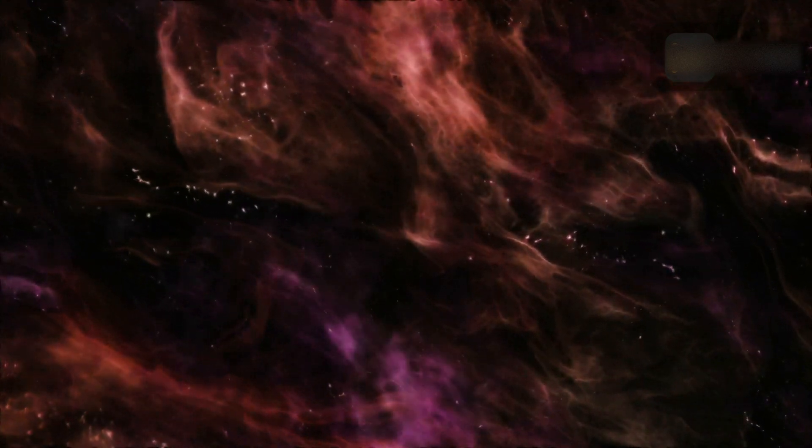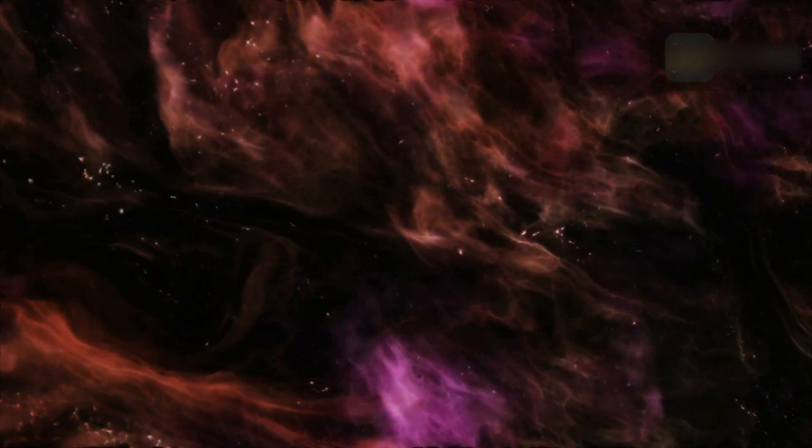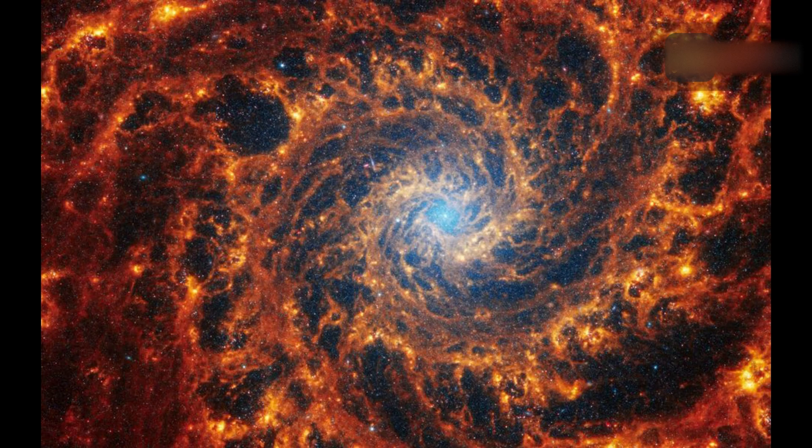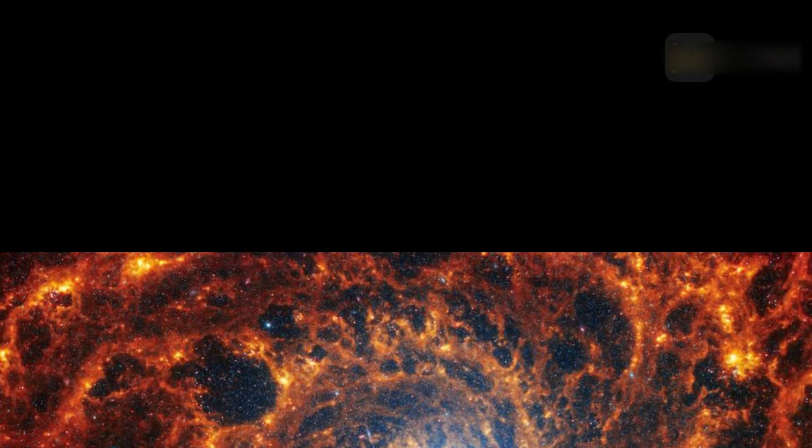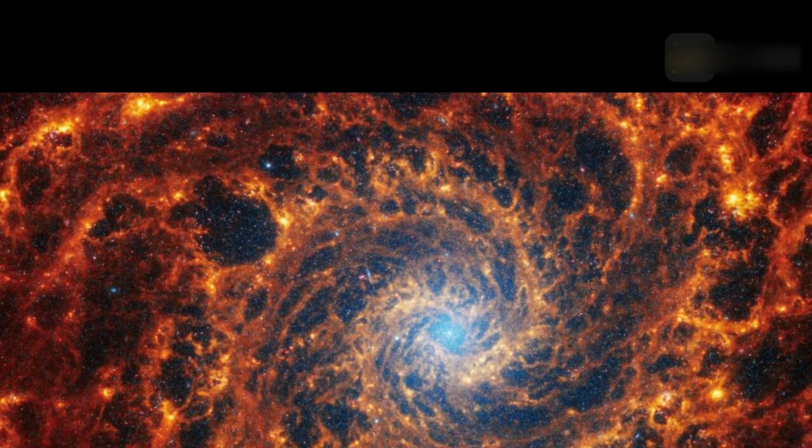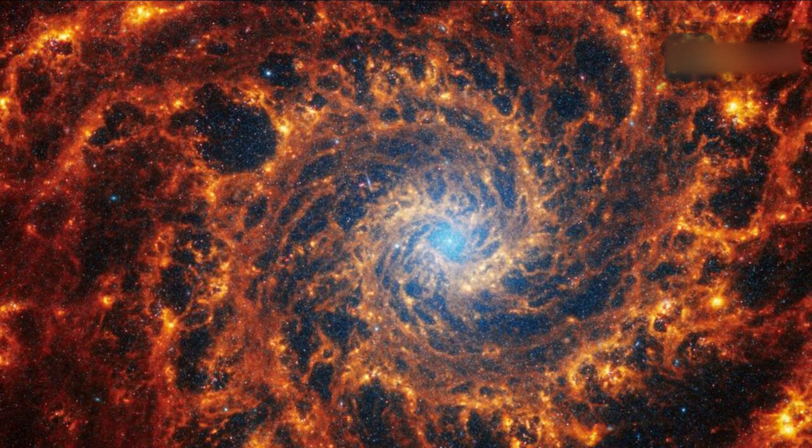These spiral arms have arguably never appeared more dynamic and vibrant than they do in the new JWST image of NGC 628, a spiral galaxy located 32 million light-years away in the constellation Pisces. In the image, the galaxy's arms appear to be spritzing gas and dust like bright orange splashes of spray paint.